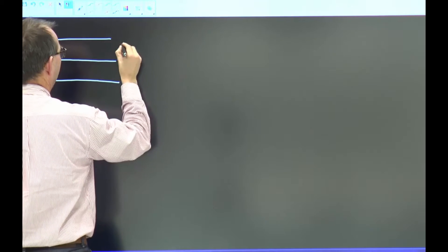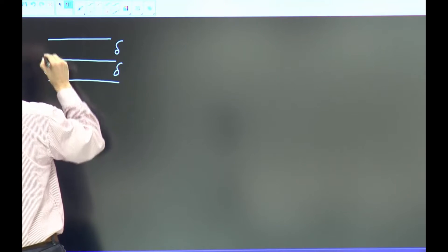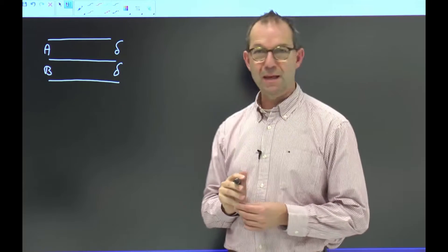Let me make a sketch. Here are two layers of liquid, both of the same thickness, delta. Bottom layer I'll call B, the top layer I'll call A.